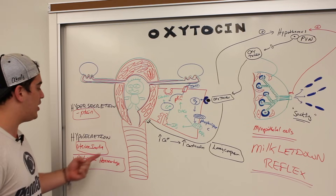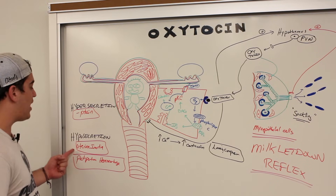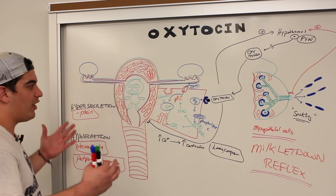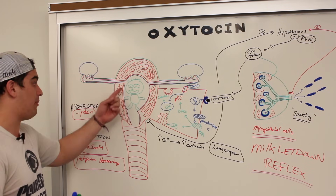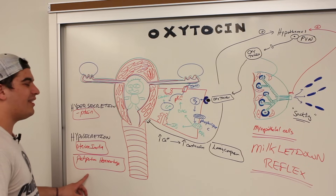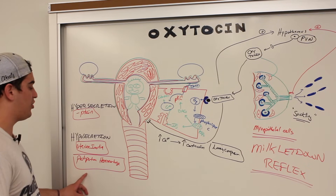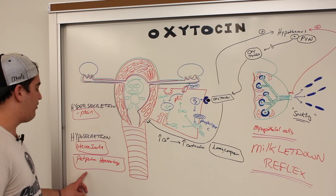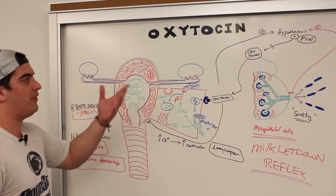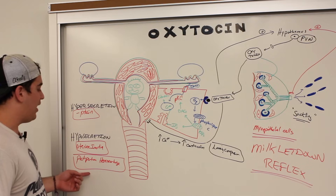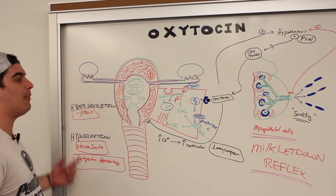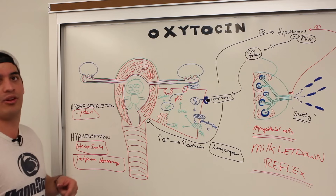For hyposecretion, whenever there are really low levels of oxytocin, it can produce uterine inertia, where the mother isn't able to have very powerful contractions and struggles to get the fetus out. And very rarely, postpartum hemorrhaging could affect the blood supply to the hypothalamus — specifically the paraventricular nuclei — causing a decrease in the amount of oxytocin produced. Less common, more common in the anterior pituitary gland.